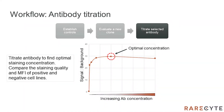The final recommended step in creating your own assay is to titrate the primary antibody. Here we are looking for a plateau in the signal-to-background, which is the MFI on positive cells divided by the MFI on negative cells. This will make for a more stable assay with the highest signal-to-background possible. In this example, the highlighted concentration would be selected.